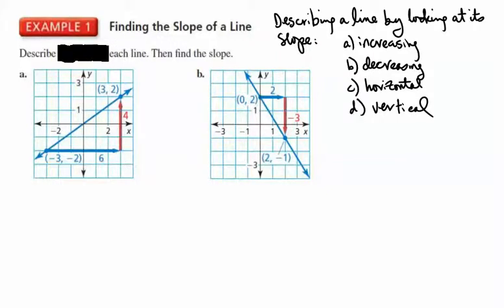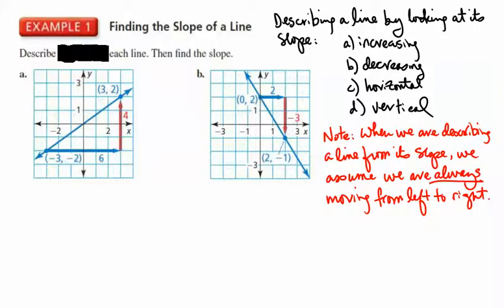We're going to calculate the slope using the methods discussed in this and previous videos. When describing a line from its slope, we assume we're always moving from left to right. In this case, as we move from point (negative 3, negative 2) over to point (3, 2), we can see that this line is increasing.